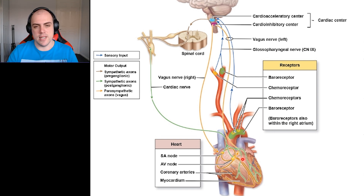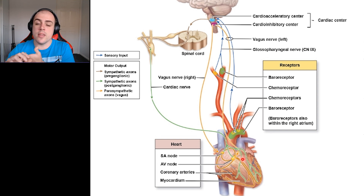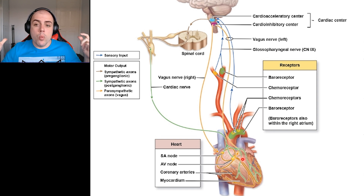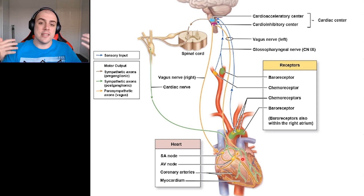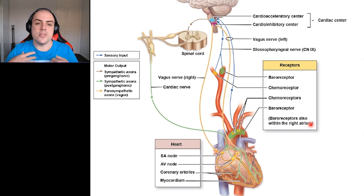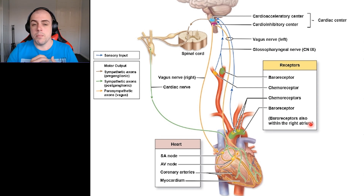We also have chemoreceptors, which detect changes in chemical stimuli such as oxygen saturation, pH, and carbon dioxide levels. If these receptors detect less oxygen, more CO2, and increasing acidity, the signal is to increase heart rate, stroke volume, and cardiac output — because this indicates not enough blood is reaching the tissues. Sympathetic stimulation increases heart rate, while parasympathetic stimulation decreases it. All of these parameters — heart rate, blood pressure, contractility, cardiac output — are constantly changing based on the body's needs.